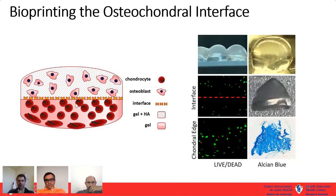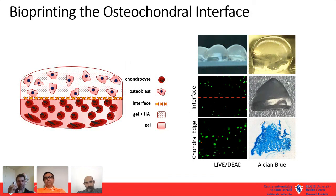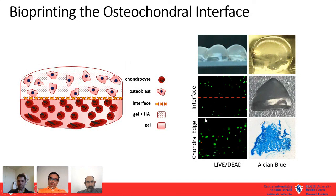We're using bioprinting to model the osteochondral interface. This is preliminary data, but we're eager to pursue it with collaborators at the Shriners Hospital. We're interested in modeling osteochondritis dissecans — a condition affecting many children where cartilage and subchondral bone peel away in the knee or elbow, causing pain and restricted movement. We can load the hydroxyapatite hydrogel with osteoblasts, and load another layer with primary human chondrocytes. We can keep these alive for up to 28 days and measure protein content, using this as a therapeutic screening model.